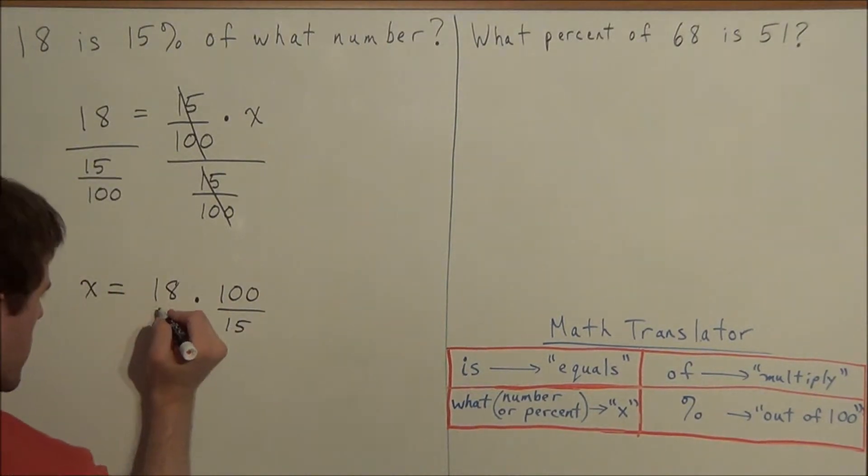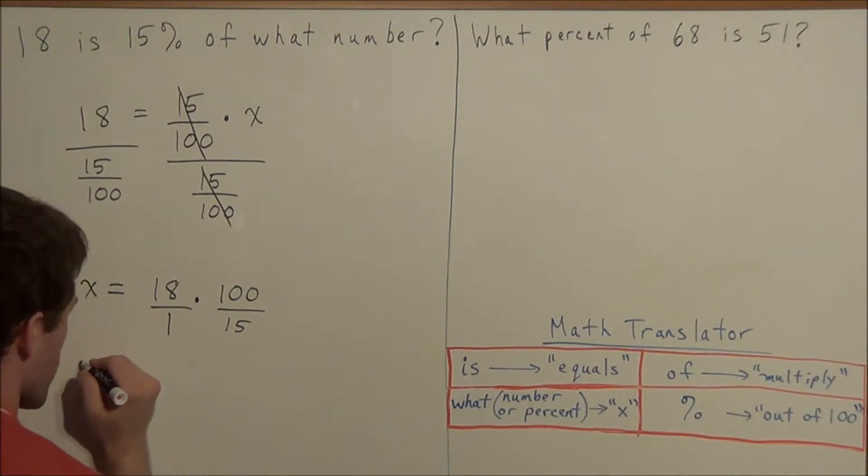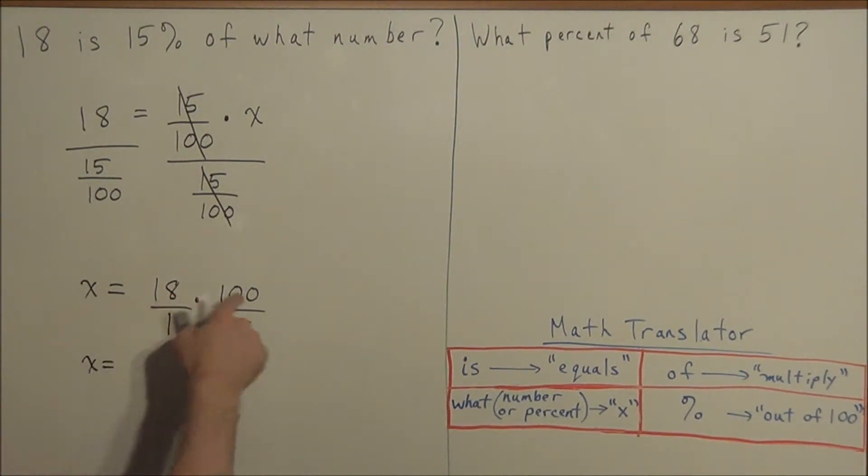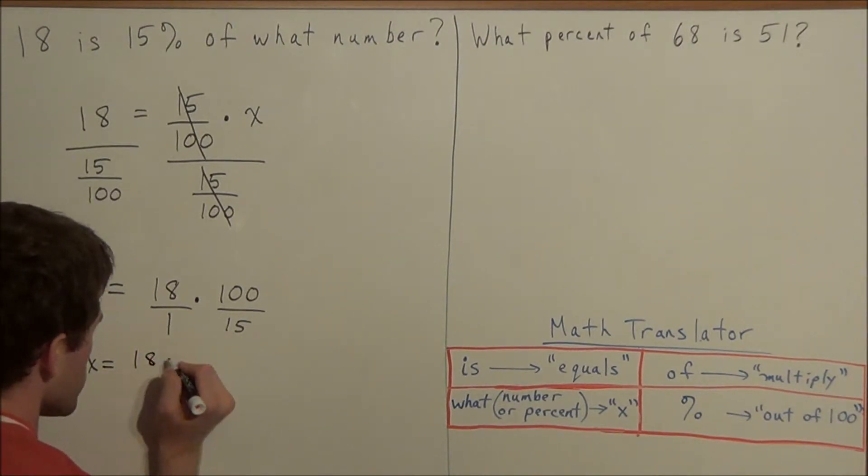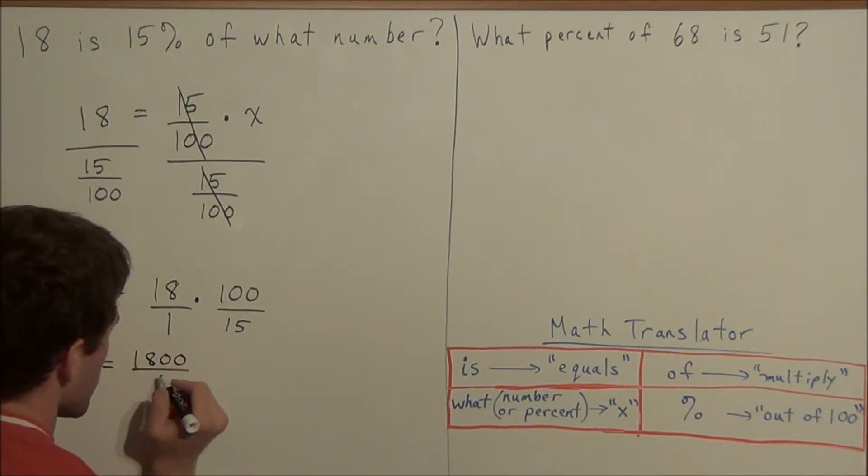And I'll write this as 18 divided by 1 to illustrate the multiplication of fractions. So now we have that x is equal to 18 times 100 is 1800 divided by 15.